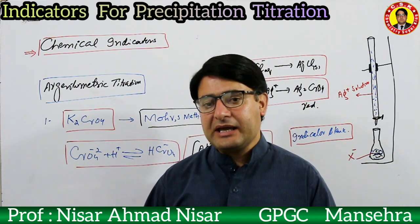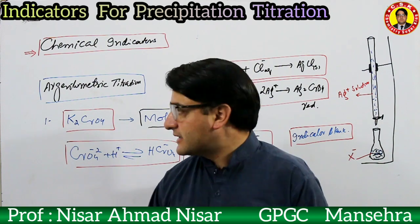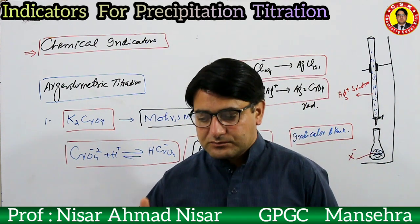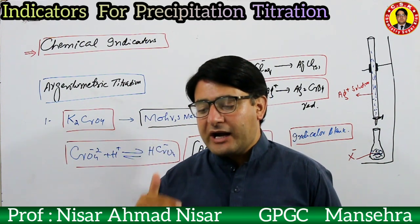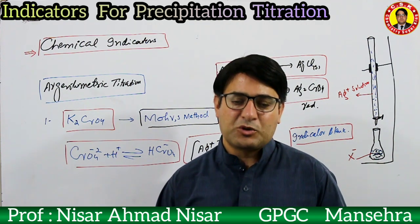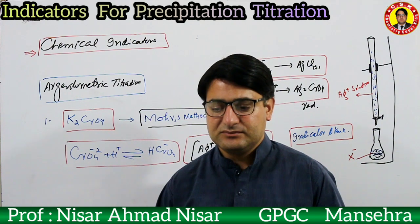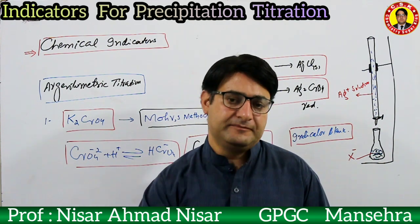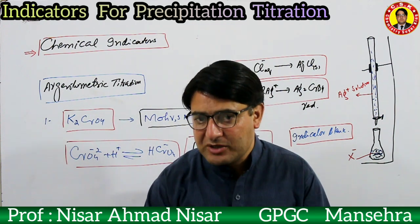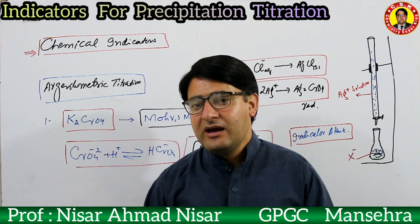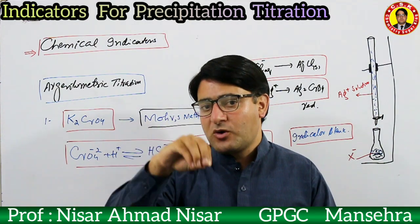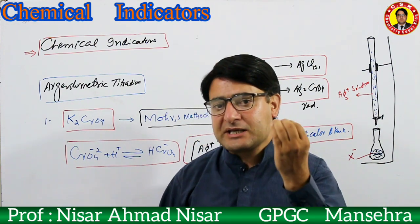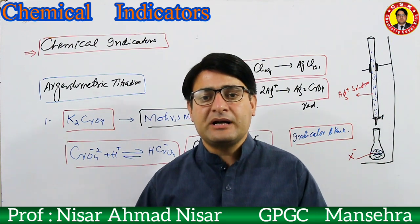The example of a chemical indicator is potassium chromate. In the titration of chloride and bromide ions with silver nitrate, potassium chromate is usually used as indicator. This is called the Mohr method for the determination of halide ions — when halide ions are determined using standard silver ion solution with potassium chromate as indicator.